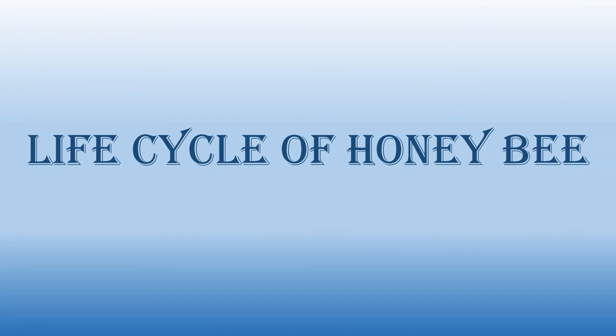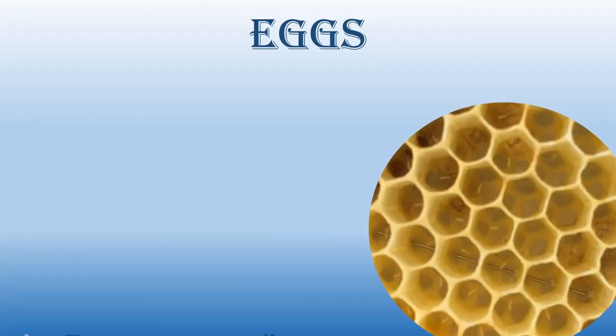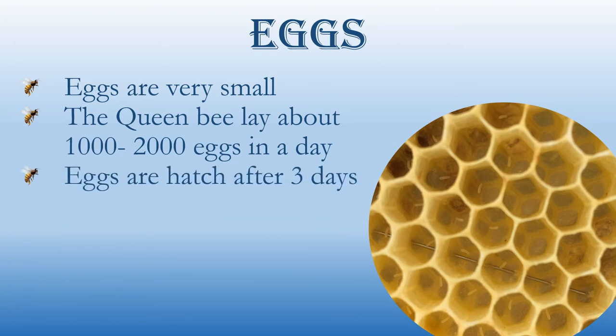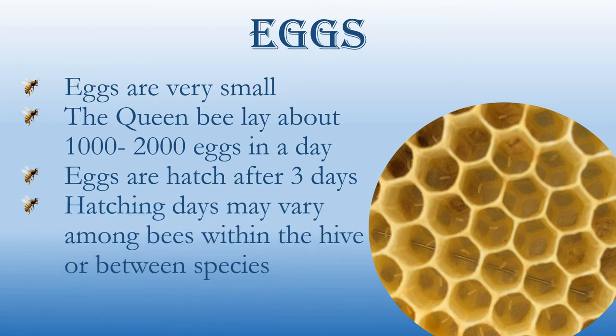The life cycle of the honeybee is completed in four stages: egg, larva, pupa, and adult. Eggs are very small. The queen bee lays about 1,000 to 2,000 eggs per day. Eggs hatch after three days, though hatching days may vary among bees within the hive or between species.